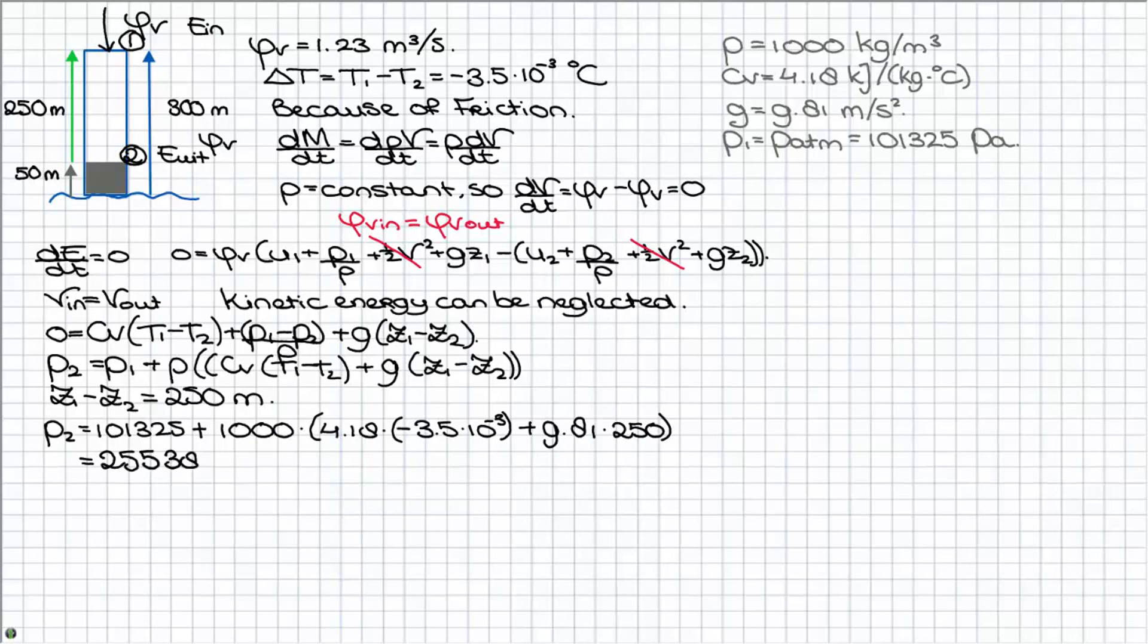To transfer your answer from Pascal to bar you have to divide your answer by 10,000. The electrical power of one generator can be determined if you observe the flow before each generator. So we get a point 3.